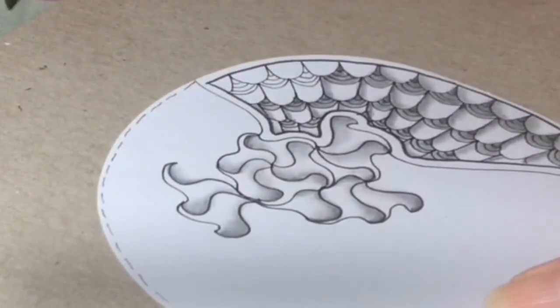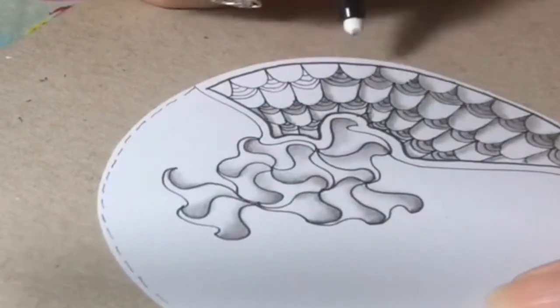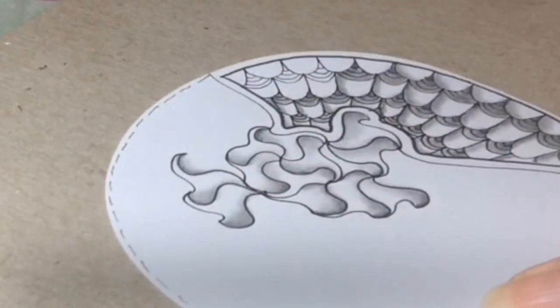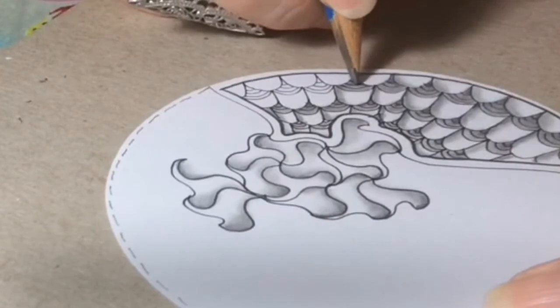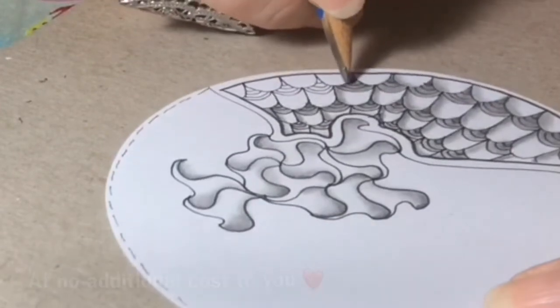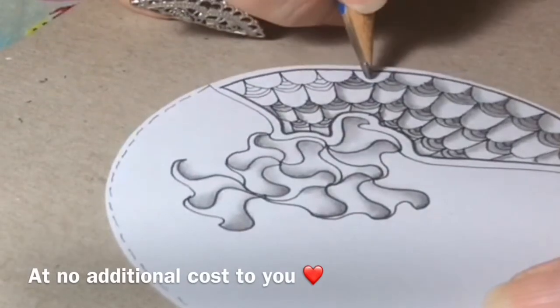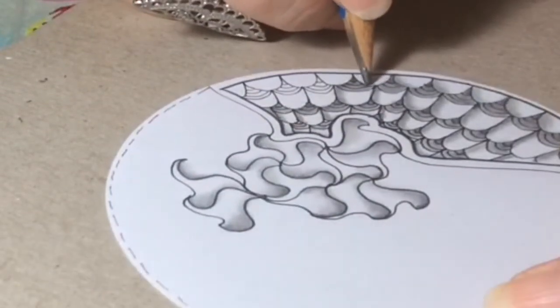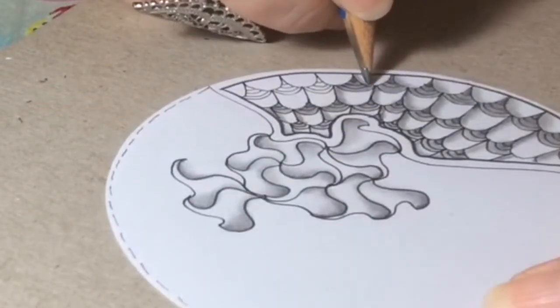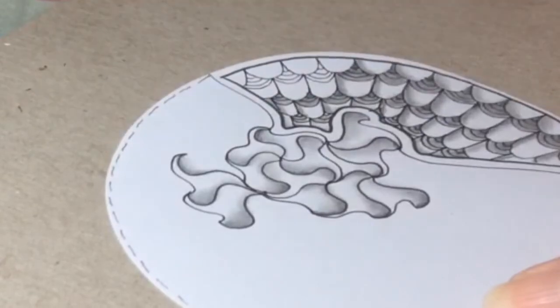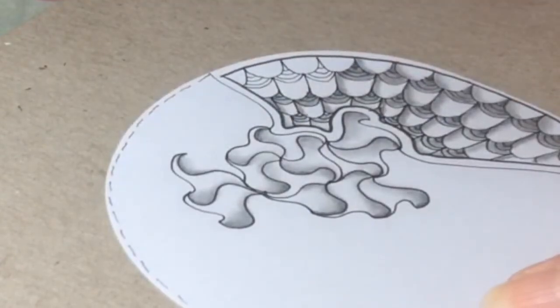I'll link everything in the description box below as usual through Amazon. You can do your artsy shopping there, that'll help support my channel. These little ones, I'll show that, just kind of go on this side. For this one I didn't use any 2B pencil, I only used the HB for this part of the zentangle.